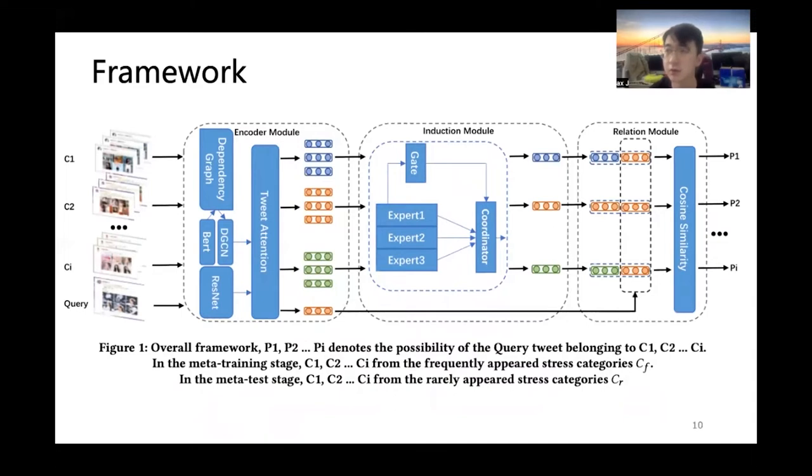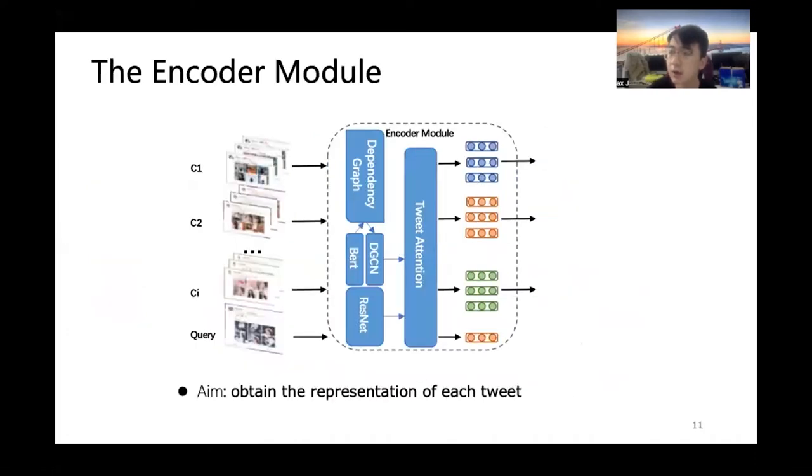Now we introduce our meta-learning framework, which contains three modules, namely encoder module, induction module, and relation module, as shown in figure 1. The encoder module aims to obtain the task-relevant representation of each tweet. The induction module aims to integrate and summarize a reference representation for each category. The relation module aims to determine which category the query belongs to. Next, we will go into more details of the three modules.